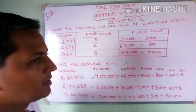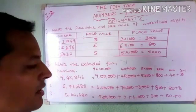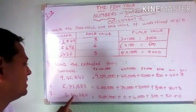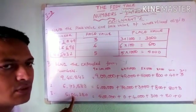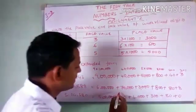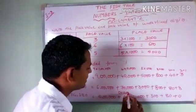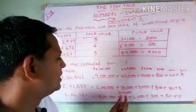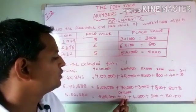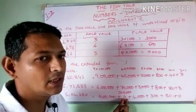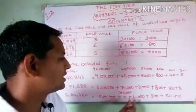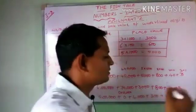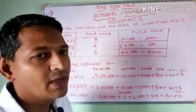The next number is 6,73,888 and it follows the same method. For the last number, 5,04,380, in the 10,000s place we have 0. So 0 multiplied with 10,000 — any number multiplied with 0 gives 0, so 0 into 10,000 is 0 itself. If you don't write this 0, it doesn't make any difference. Similarly, the last digit 0 into 1 is also 0, so not writing it doesn't make any difference either.